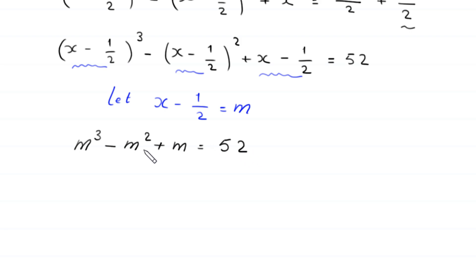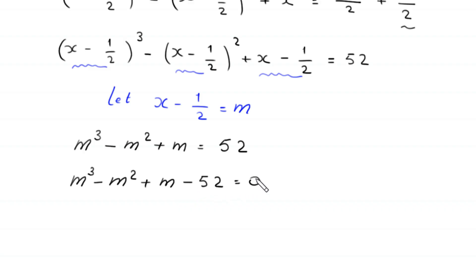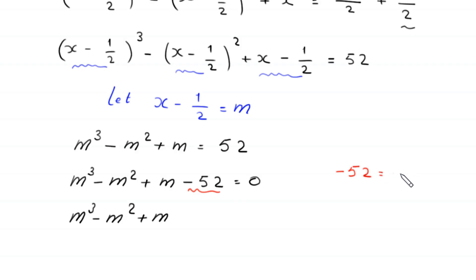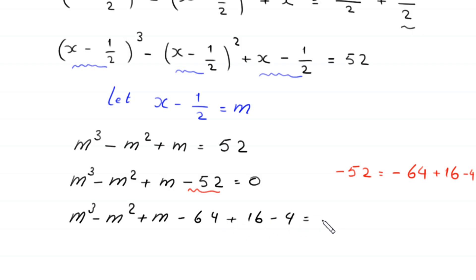We move 52 to the left-hand side, giving m³ minus m² plus m minus 52 equals 0. We can write negative 52 as negative 64 plus 16 minus 4, so the equation becomes m³ minus m² plus m minus 64 plus 16 minus 4 equals 0.